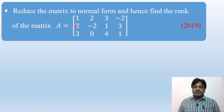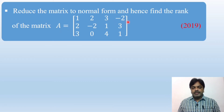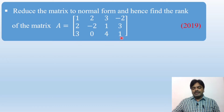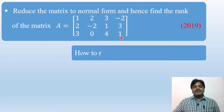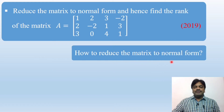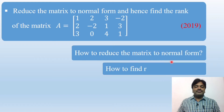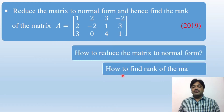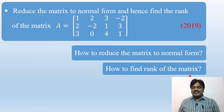Matrix A is equal to: row 1 is 1, 2, 3, minus 2; row 2 is 2, minus 2, 1, 3; row 3 is 3, 0, 4, 1. How to reduce the matrix to normal form and how to find the rank of the matrix.